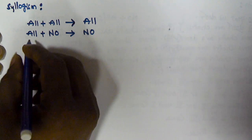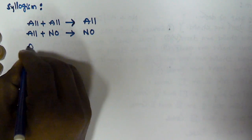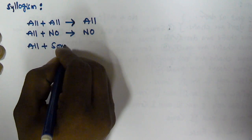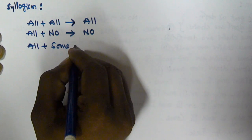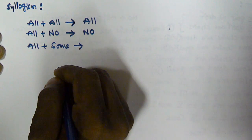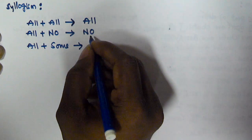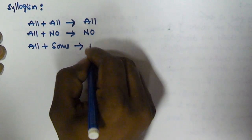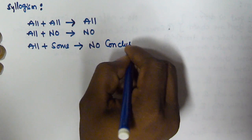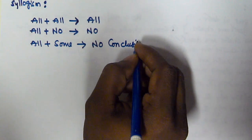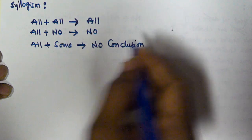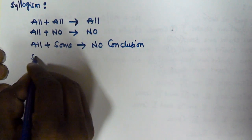If the first statement starts with 'all' and the second starts with 'some', and the predicate of the first is equivalent to the subject of the second, then there is going to be no conclusion.